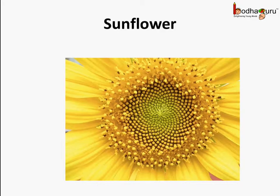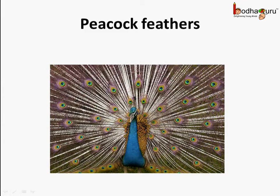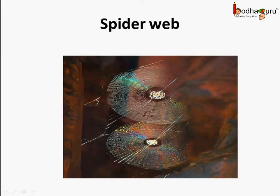You know, in nature, you will find a lot of symmetrical objects. Like this sunflower. Then, look at this peacock, which is the national bird of our country, India. If we see the feathers, they are arranged so symmetrically. And what about the house of the spider, which is a web? This is also symmetrical in nature.